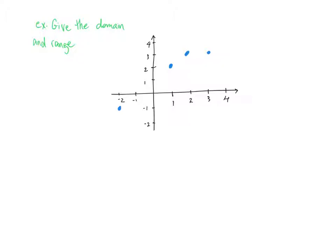Okay, so here we have a graph and we are being asked to find the domain and the range. In order to figure out the domain and range, it's really helpful if we actually know what these points are. So let's go ahead and put the coordinates of these points on our graph. So here we have negative 2, negative 1 — we can go ahead and put that in. And we have 1, 2 — we can put that in. And we also have 2, 3 — let's put that in.